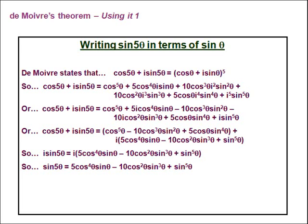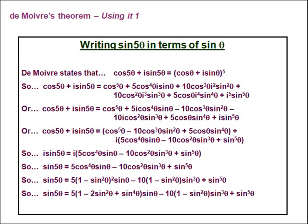However, the question requires us to write sin(5θ) in terms of sinθ only, which means we need to eliminate the cosines. To do this, we use the identity sin²θ + cos²θ = 1, i.e. cos²θ = 1 − sin²θ. For cos⁴θ, we square that expression. Then it is simply a case of multiplying out the brackets, giving the final answer: sin(5θ) = 5sinθ − 20sin³θ + 16sin⁵θ.